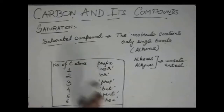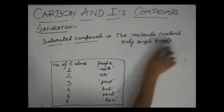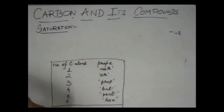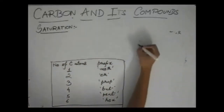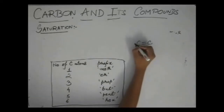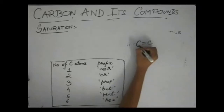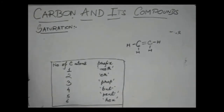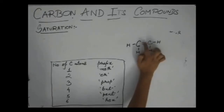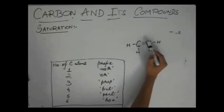Why is this definition given — that the molecule which contains only single bonds is saturated? You see, if there is an alkene, suppose this is C2H4. Now, this double bond — if you see, this bond contains two electrons, the shared electrons, one from this carbon and one from this carbon.